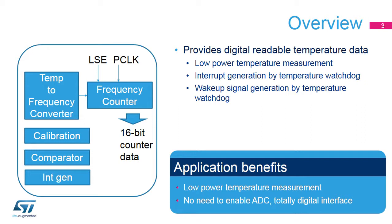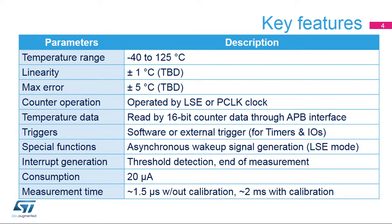It also integrates a window comparator for threshold detection. This comparator triggers an interrupt when the temperature exceeds a predefined level. The STM32MP1 device integrates a digital temperature sensor which can measure the die temperature from minus 40 to 125 degrees Celsius. It can operate either using the LSE clock or PCLK clock.